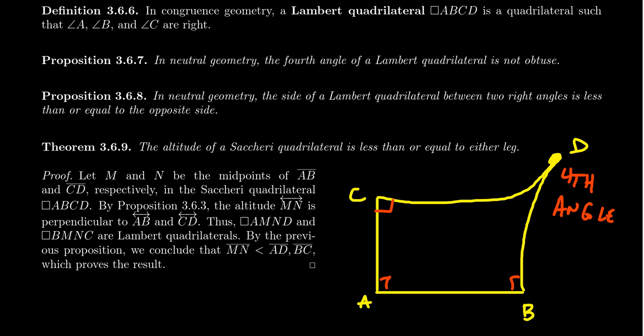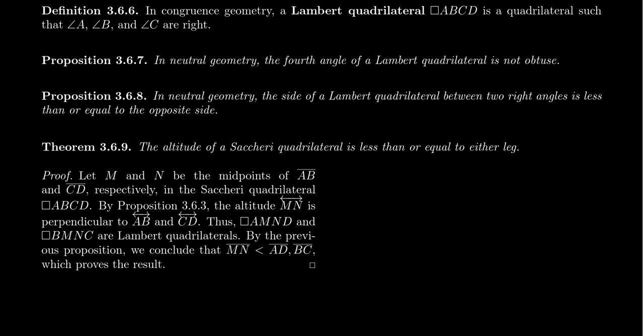But I keep talking about the right, acute, and obtuse angle hypotheses — I thought those had to do with summit angles of Saccheri quadrilaterals. Why does it also relate to the fourth angle of a Lambert quadrilateral? We're going to see this in just a second, but it turns out that Lambert quadrilaterals are closely related to Saccheri quadrilaterals. The two notions are actually equivalent to each other when you take the right change of perspective. Let me mention some propositions about Lambert quadrilaterals.